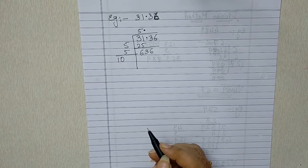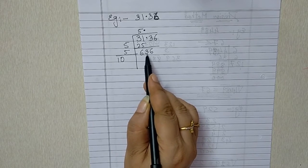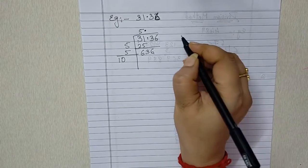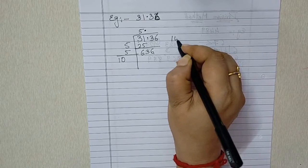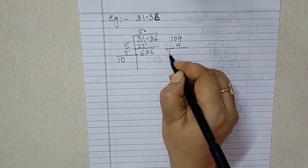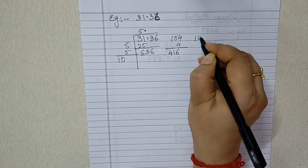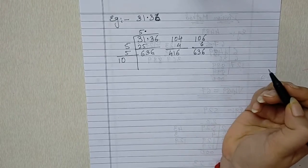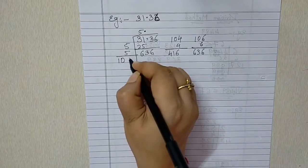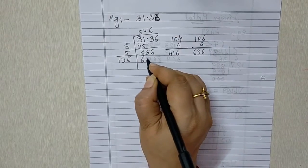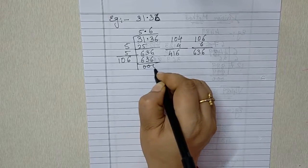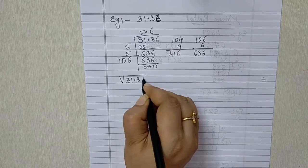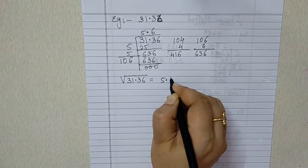Then we have to add anything over here through which we get 636. Last digit is 6. So we can add either 4 or 6. Let us check with 4. We get 104×4=416. And then with 6, yes we got 106×6=636. So we will be putting 6 over here. And in the quotient also we got the remainder 0. So the square root of 31.36 is 5.6.